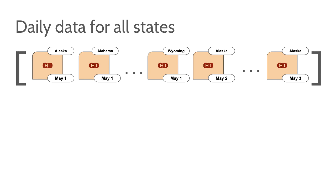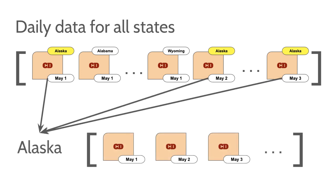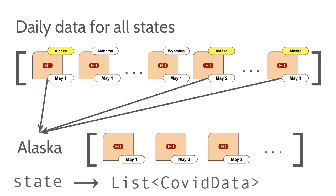In terms of being able to graph the data, all we really care about is being able to retrieve all of the data relevant for, say, Alaska. Our job is to take this big list of data, pull out all the data relevant to Alaska, and put that into a separate list. The idea is to take this big list and break it down into a map, where the key is the state and the value is all the CovidData relevant to that state.